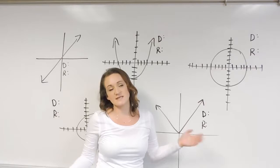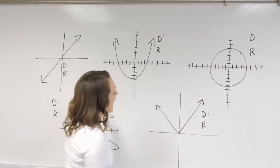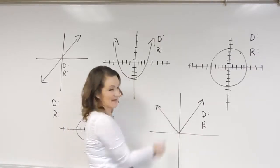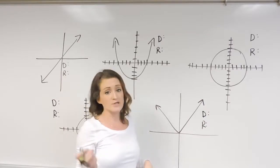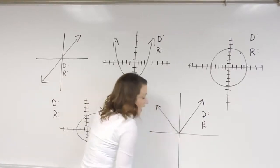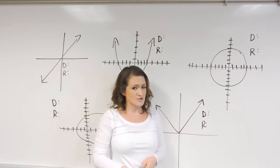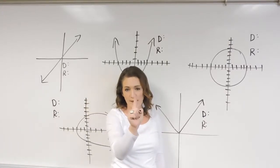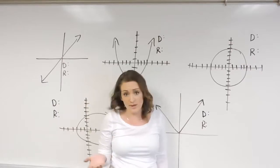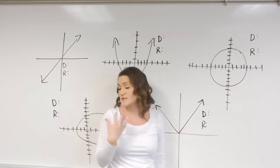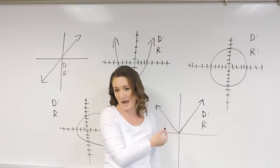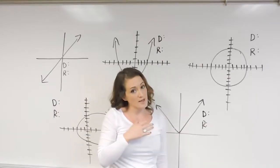The vertical line test essentially says: if I can draw a straight vertical line anywhere on my graph, and as long as it only intersects at one point, then we're good. If it crosses more than one time — whether that's two, three, or four times — if it's more than one time that it cuts through the graph, it is not a function.